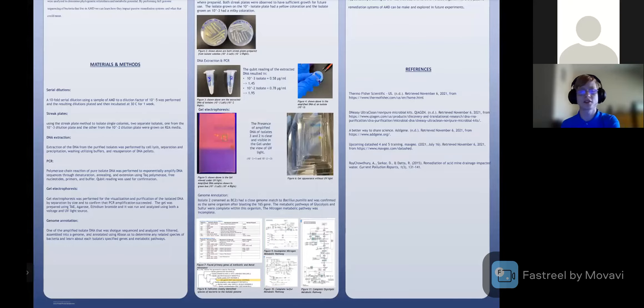Moving on to DNA extraction, we needed to extract the DNA from the purified isolates. In order to do this, cell lysis was induced, then the DNA was separated, precipitated, washed, and then resuspended. Polymerase chain reaction was utilized to amplify this extracted DNA, after which qubit readings were also performed. Gel electrophoresis was the next step in order to analyze our isolated and amplified DNA. The gel was prepared using TAE agarose ethidium bromide and it was analyzed using both voltage and a UV light source.